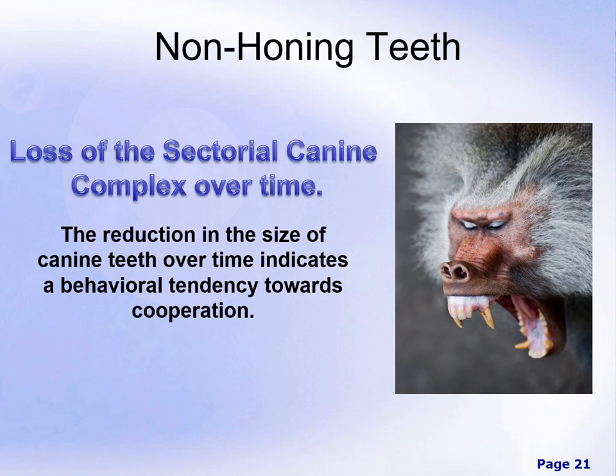We'll look at the loss of non-honing teeth, or what we call the sectorial canine complex, over time. We'll look at why our primate relatives and ancestors have large canine teeth but modern humans and some of our distant relatives lost these honing teeth. We think the reduction in size over time indicates a behavioral tendency towards cooperation, because in most primate and mammalian species, canine teeth are not used for eating — they're used for behavior, specifically threatening. Usually males of the species have very large canines because males compete viciously with one another over access to mates.